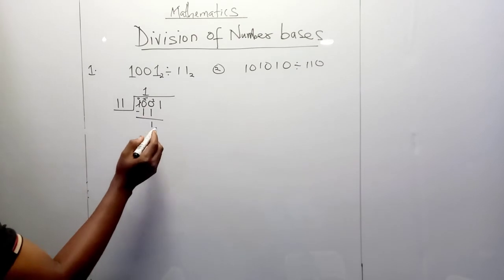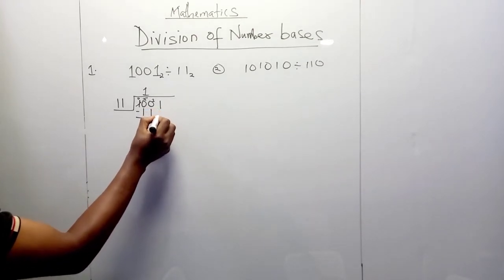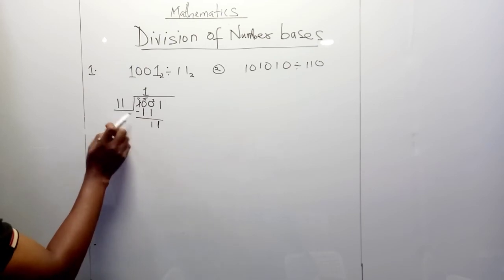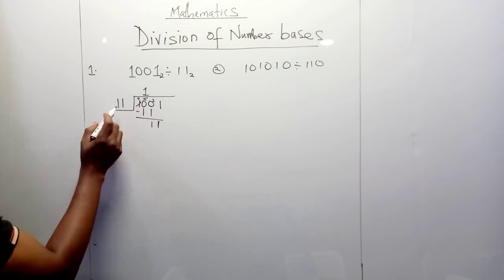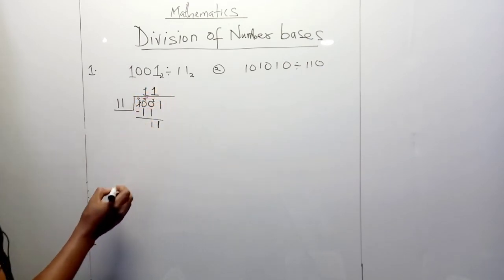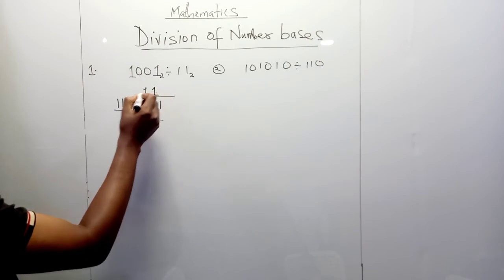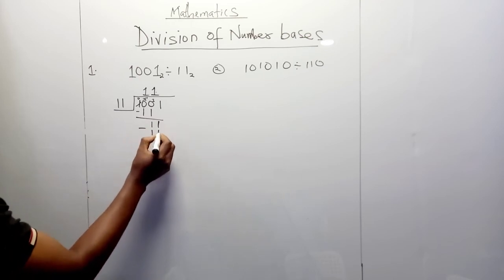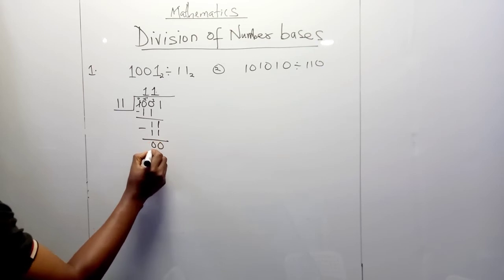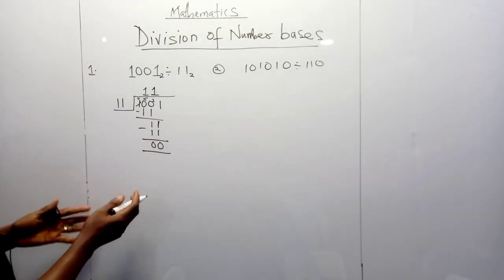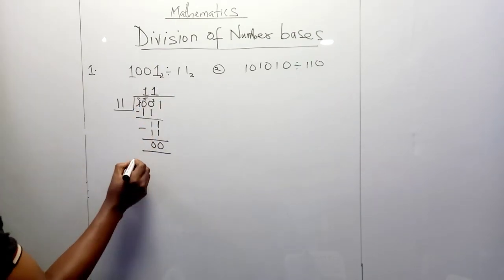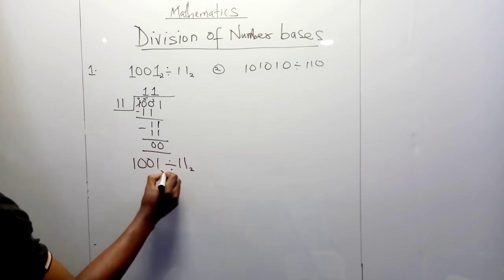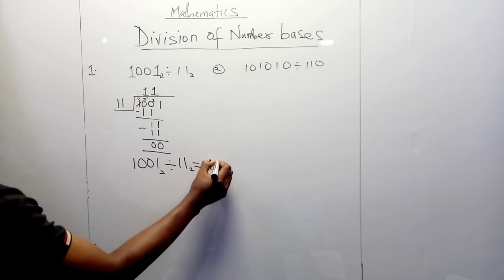We move the next digits directly under. We now have 11 divided by 11, which is obviously 1. We multiply 1 by 11 again to get 11, then subtract: 1 minus 1 is 0, and 1 minus 1 is 0. Since we have no remainder, the answer to 1001 divided by 11 in base 2 is 11 in base 2.